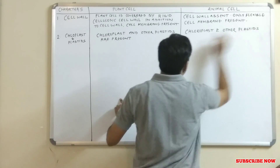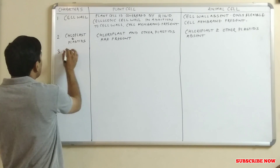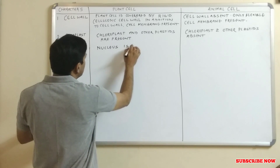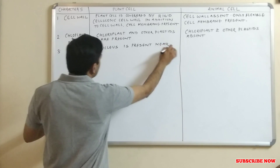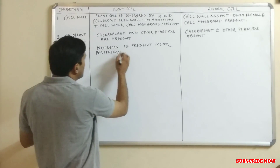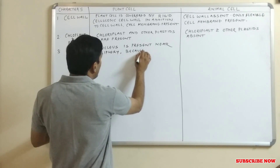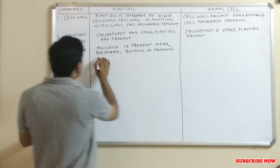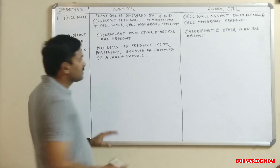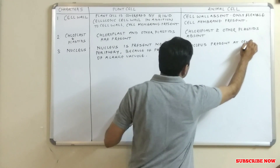The next point is the nucleus. In the plant cell, the nucleus is present near the periphery. The reason for this is that a large vacuole is present in the plant cell, which pushes the nucleus toward the periphery — because of the presence of this large vacuole.